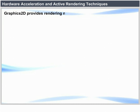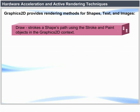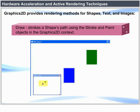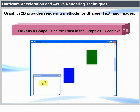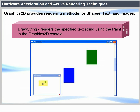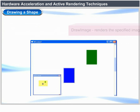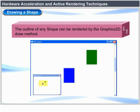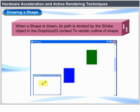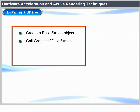Graphics2D provides rendering methods for shapes, text and images. Draw strokes a shape's path using the stroke and paint objects in the Graphics2D context. Fill fills a shape using the paint in the Graphics2D context. DrawString renders the specified text string using the paint in the Graphics2D context. DrawImage renders the specified image. Drawing a shape: The outline of any shape can be rendered by the Graphics2D draw method. When a shape is drawn, its path is stroked by the stroke object in the Graphics2D context. To render the outline of a shape, create a BasicStroke object, call Graphics2D.setStroke, create the shape, and call Graphics2D.draw(shape).